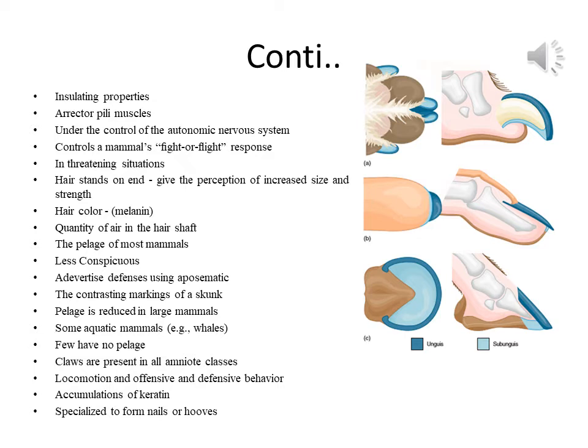Nails are flattened claws found on the hands and feet of primates and are an adaptation for arboreal habits where grasping is essential. Hooves are characteristic of ungulate mammals; the number of digits is reduced and the animals walk on the tips of the remaining digits. The unguis is a hard keratinized dorsal layer and the sub-unguis is a softer palate.